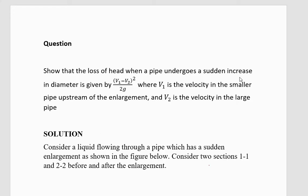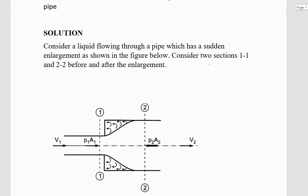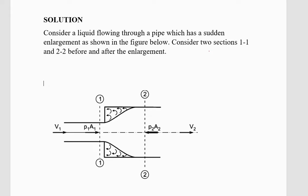Let us look at the solution of this question. In this solution we are going to consider a liquid that is flowing through a pipe which has a sudden enlargement as shown in the figure. If we consider two sections 1-1 and 2-2 before and after the enlargement, let us assume that V1 is the velocity of the fluid at section 1-1, P1 is the pressure intensity at 1-1, and A1 is the area of cross-section at 1-1. Then P2, A2, and V2 are the corresponding values at section 2-2.